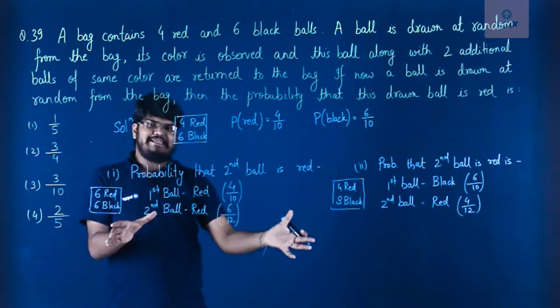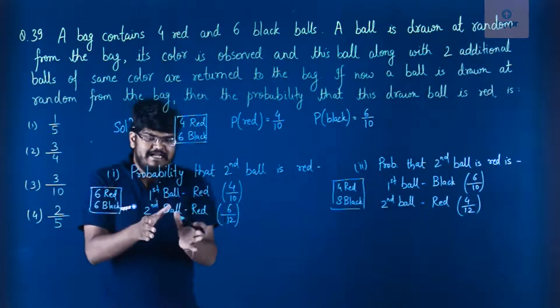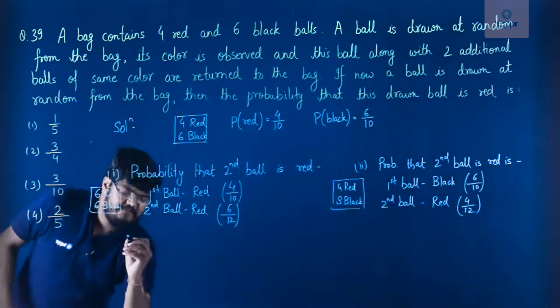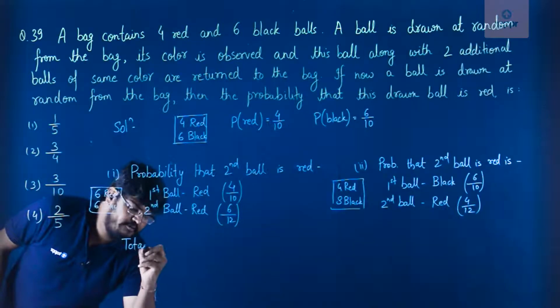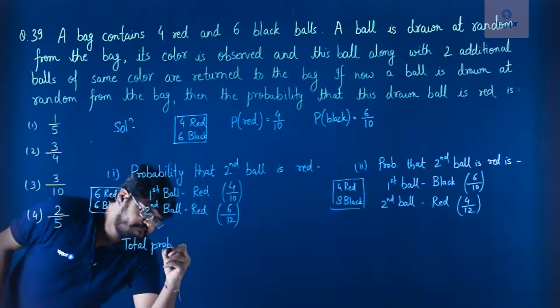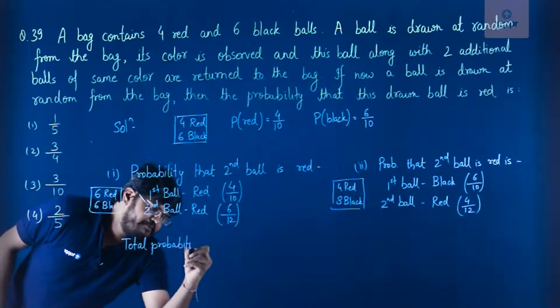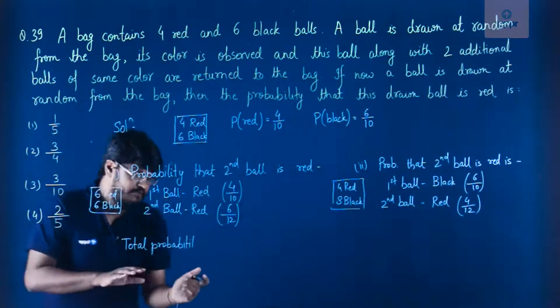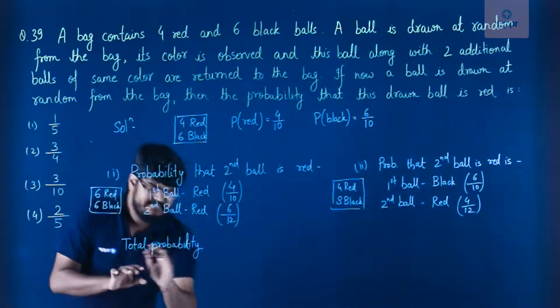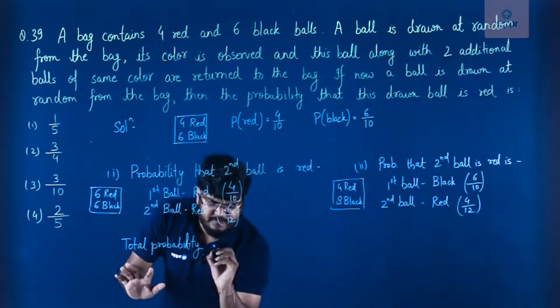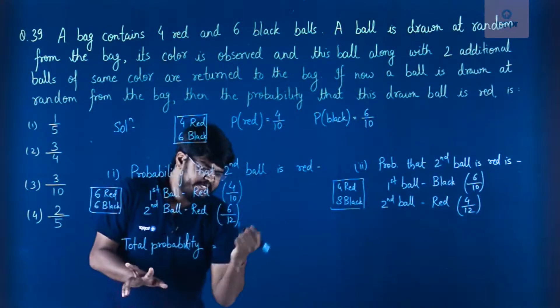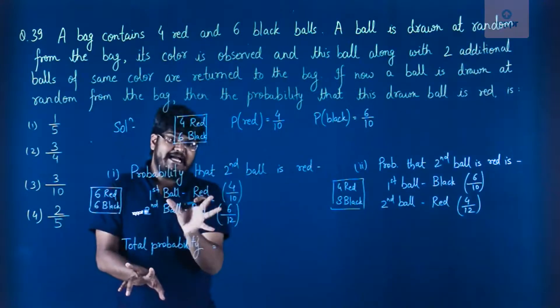So we have taken both the cases which will give us red ball in the second draw. Now let's find out the total probability. So total probability will be equal to sum of the probabilities of both the cases. So spelling of probability is a bit incorrect, just consider it.